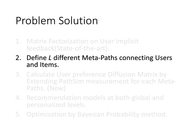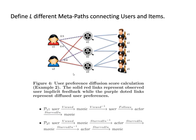After matrix factorization, they define l different metapaths. A metapath starts with a user and ends with an item. For example, if a user views a movie, and that movie was also viewed by another user who follows an actor, then other movies by that actor can be recommended to the first user. They define l different metapaths to build the recommendation.